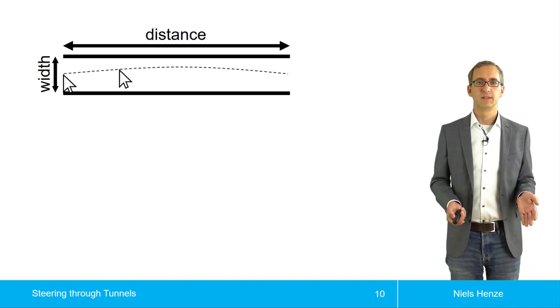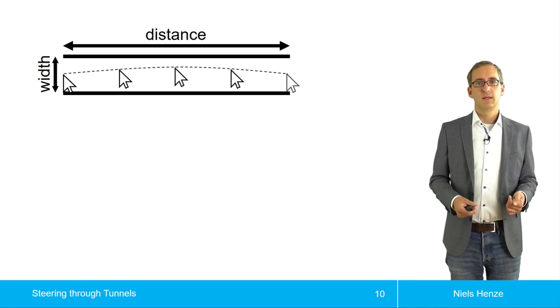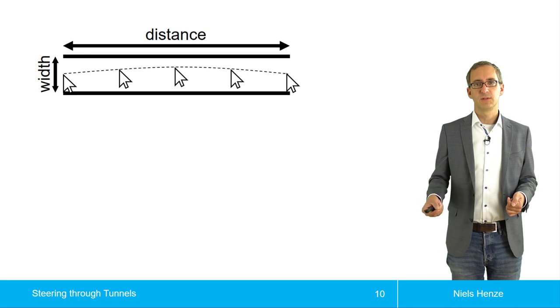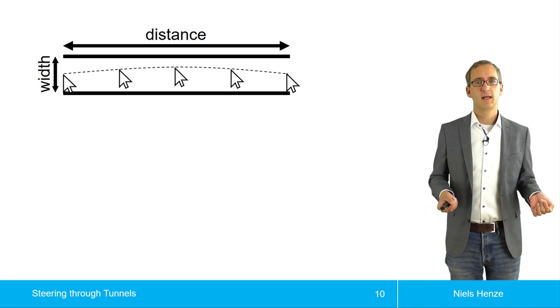So we have these two parameters. And then the mouse moves through this tunnel. And for each of these positions, we might wonder, how hard is the task?